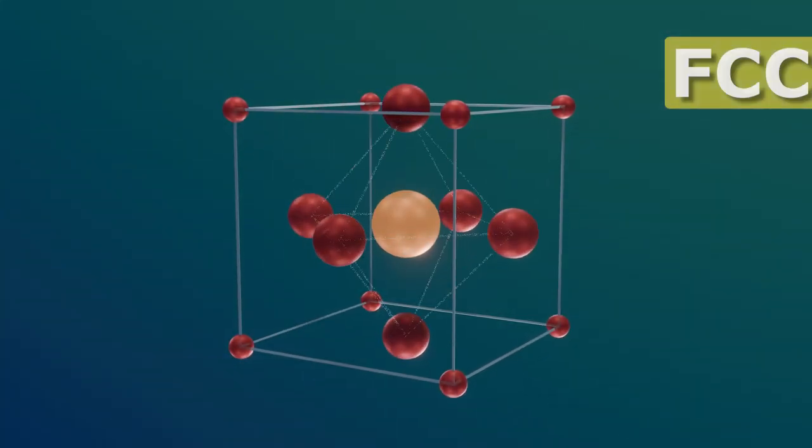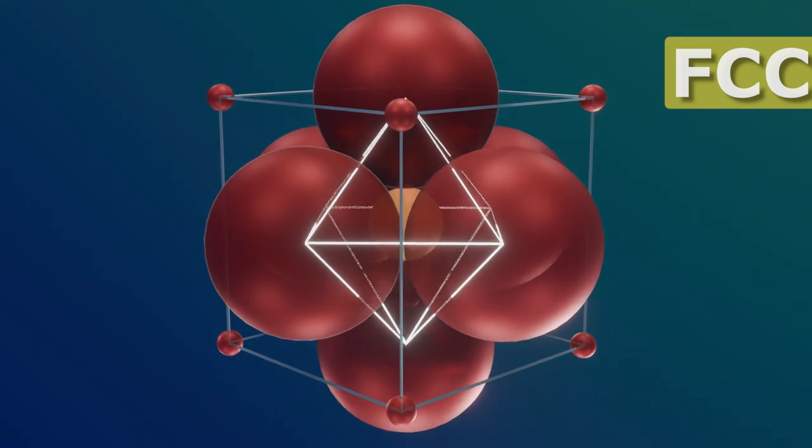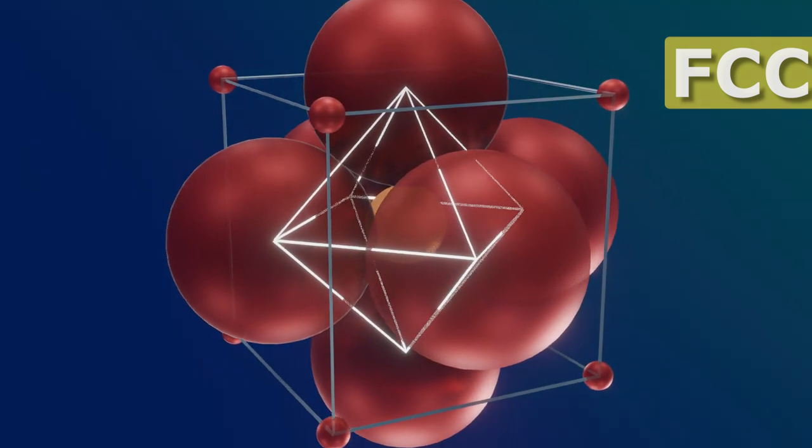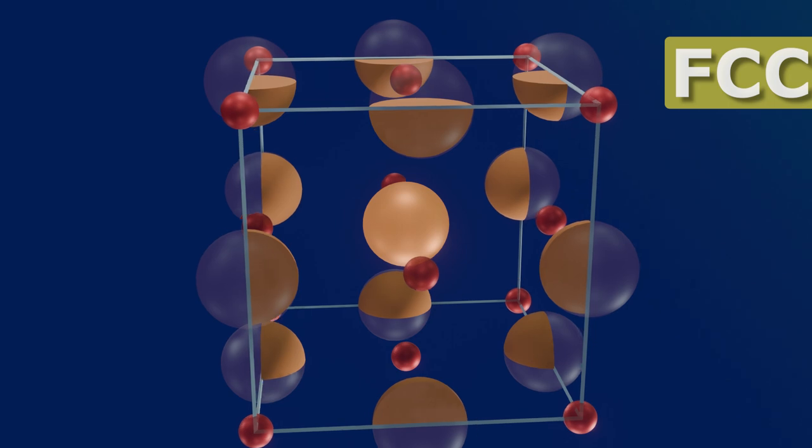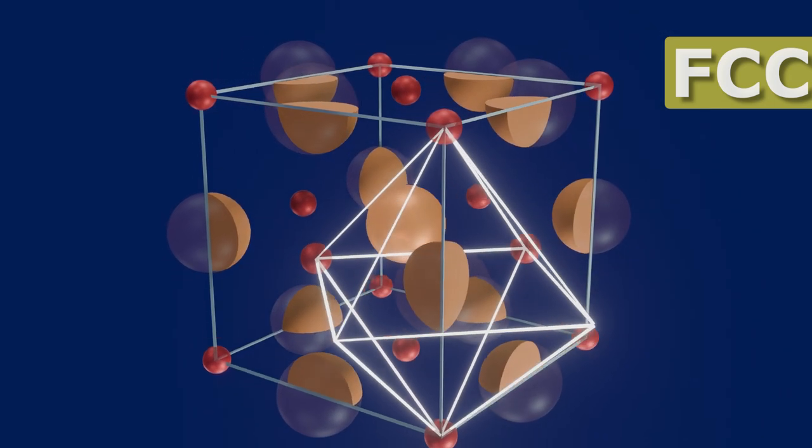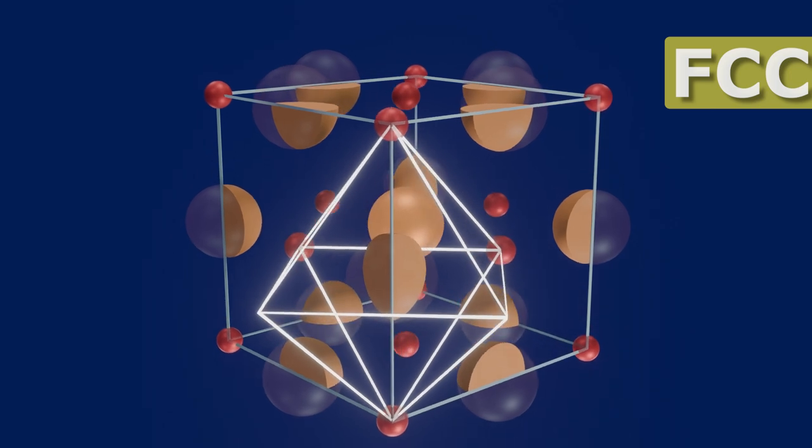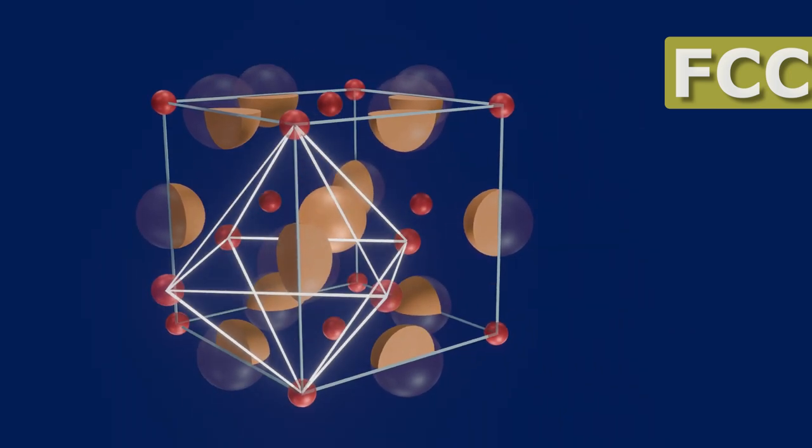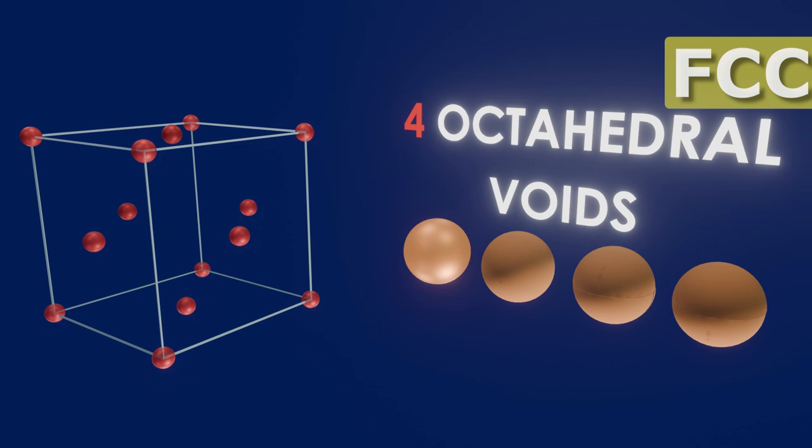Octahedral voids are located on the body center of the whole lattice between all six face-centered atoms. One-fourth of octahedral voids are also located on the edge centers using some atoms from the cell and surrounding cells. Thus, there are eight tetrahedral and four octahedral voids inside FCC.